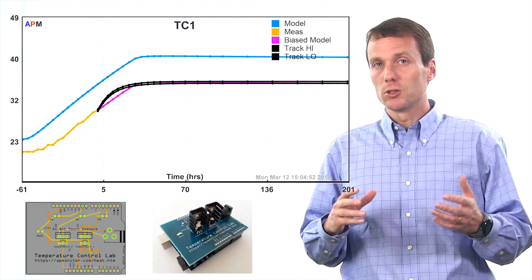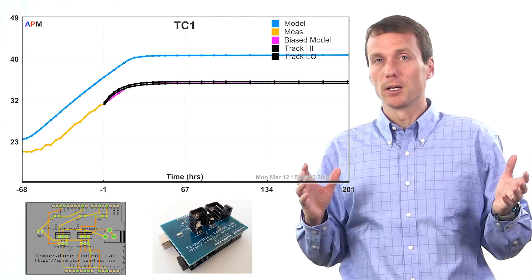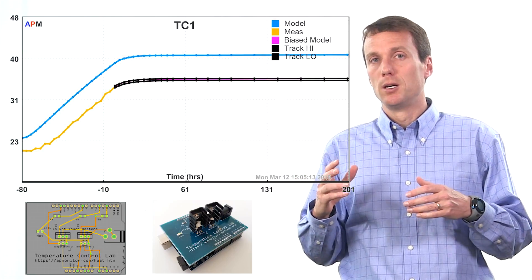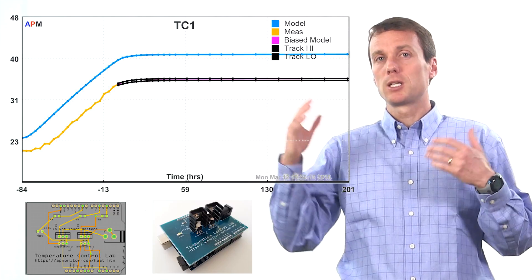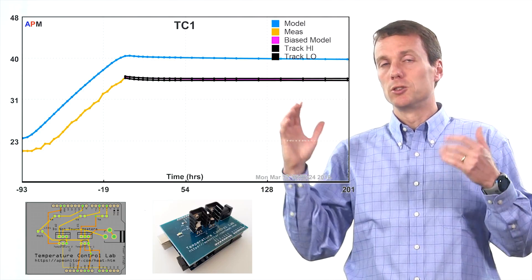The other thing that we're going to be doing as a follow-on step to that is implement a model predictive controller. The model predictive controller is going to use that predictive model between the heater and the temperature sensor in order to make predictions into the future. Like you're driving.